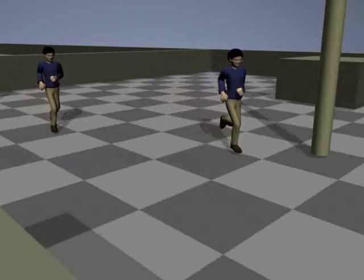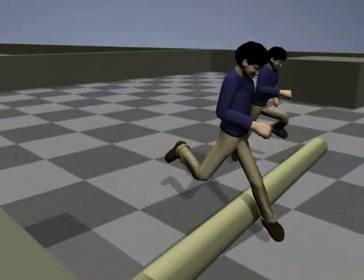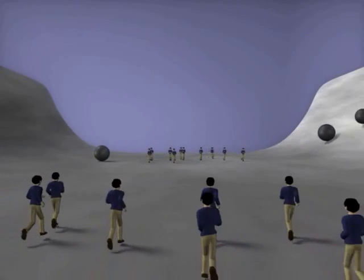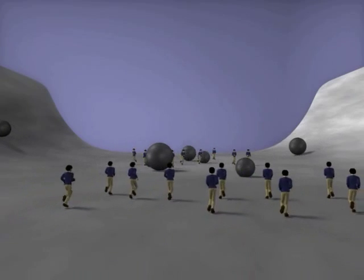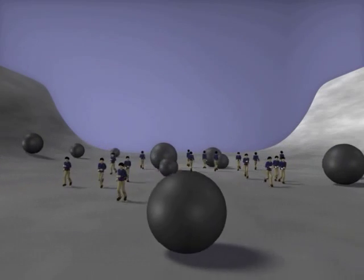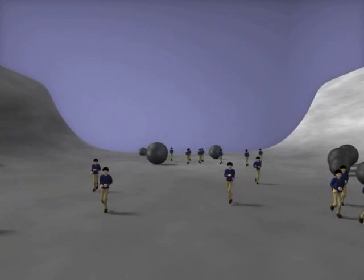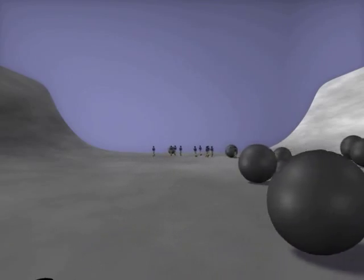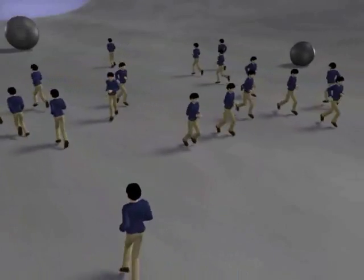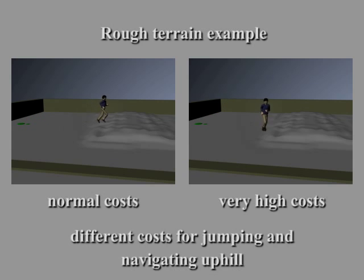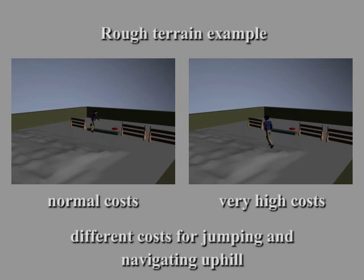Here are animations generated by our behavior planner. Here the character on the right is intentionally given a very high cost for jumping and navigating uphill. It therefore avoids these two motions, even though it has to take a more indirect path to get to the goal.